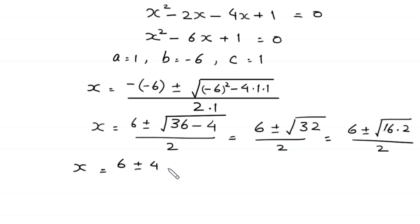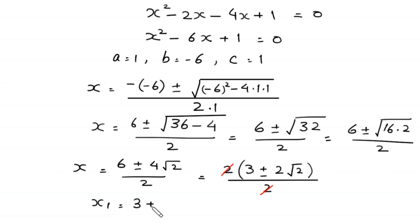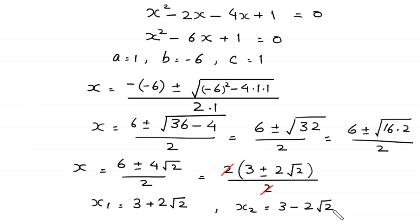We can write 32 as 16 times 2, so square root of 32 is 4 times square root of 2. Factoring out 2 from numerator: x equals 2 times (3 plus or minus 2√2) divided by 2. The 2 cancels, giving x₁ equals 3 plus 2√2 and x₂ equals 3 minus 2√2.